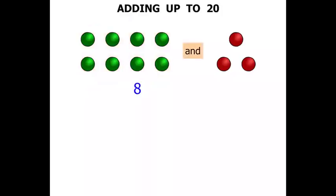Now we're going to see the word AND — we're going to replace that with PLUS. And how many balls here? 1, 2, 3. So let's write 3 down.